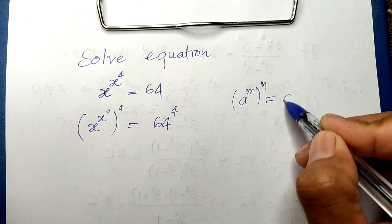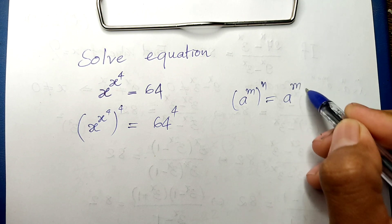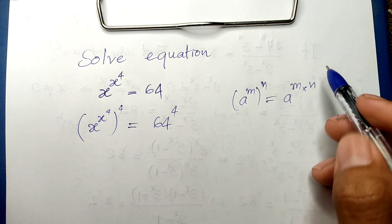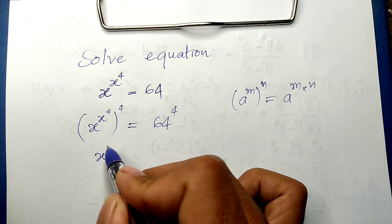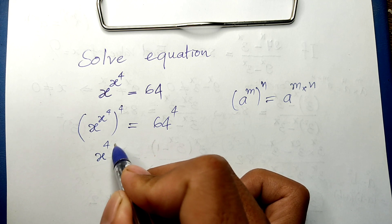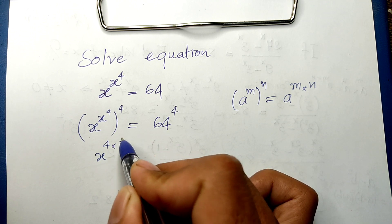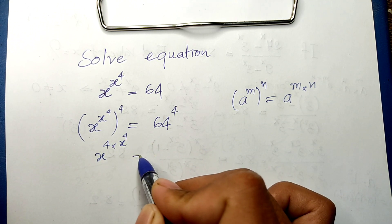So this we get x to the power 4 times x to the 4th power. And this, 64, I can write it as 8 squared to the power 4.